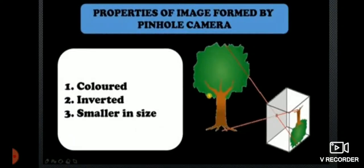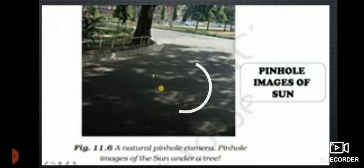And also, the properties of the image formed by a pinhole camera are: it will be colored, inverted and smaller in size. A natural pinhole camera is the pinhole images of the sun under a tree. You might have seen the image of the sun under a tree through the gaps of the leaves. That is the pinhole image of the sun formed by the trees.